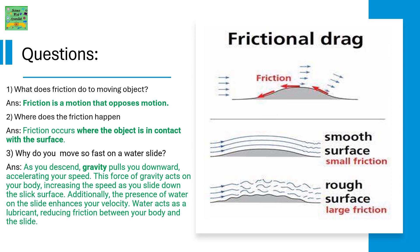Where does the friction happen? Friction occurs where the object is in contact with the surface.